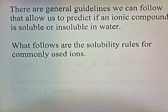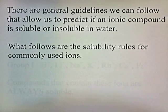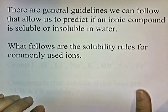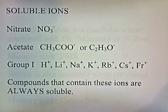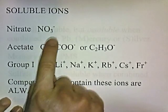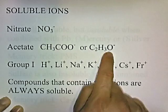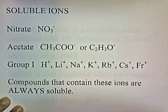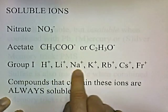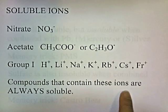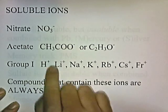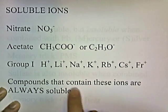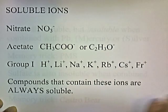There are general guidelines we can follow to predict if an ionic compound is soluble or insoluble in water. Here are the soluble ions: nitrate, acetate, and group 1 elements — hydrogen ion, lithium, sodium, and so on. Compounds that contain these ions are always soluble. Any ionic compound that has nitrate is always soluble; if it has acetate, always soluble; if it has sodium ion or any other group 1 ion, always soluble.